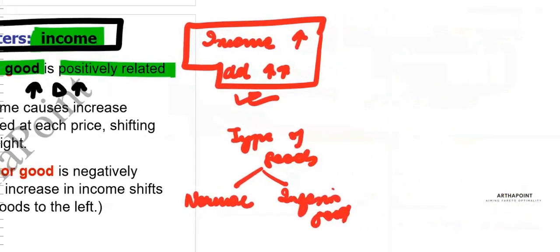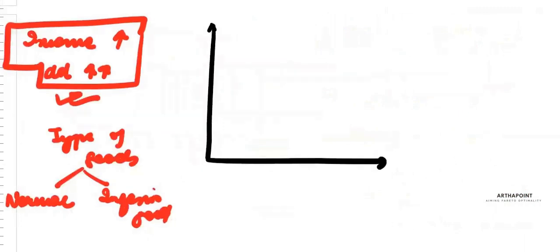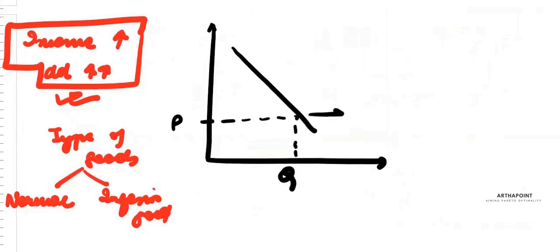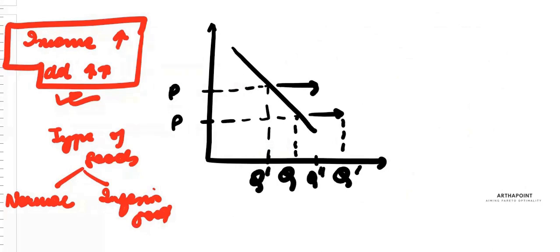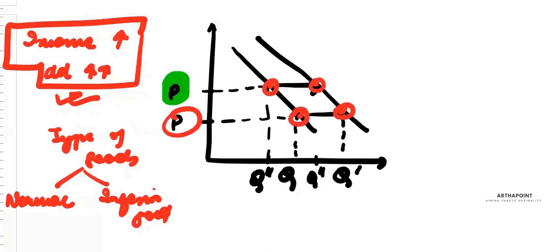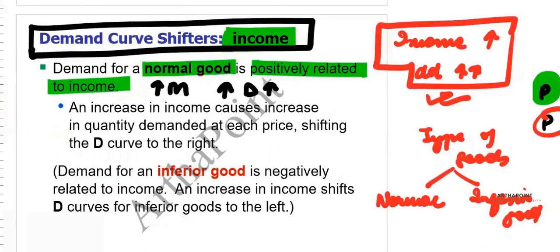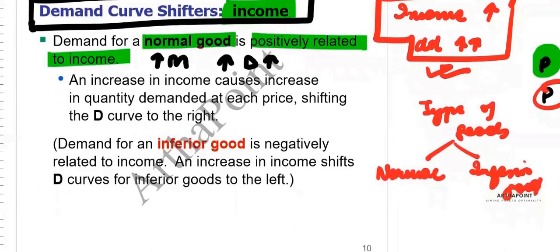Even at the same price, if your income increases you will demand more. So the demand curve overall will shift to the right — at any price, whatever your earlier demand was, you will demand more. An increase in income causes an increase in demand for a normal good.